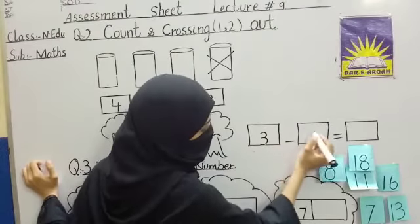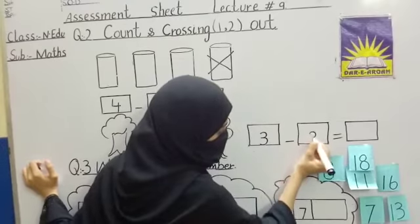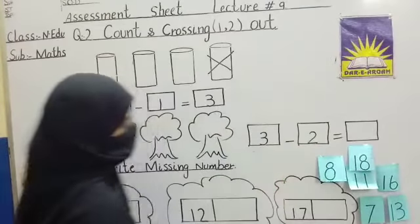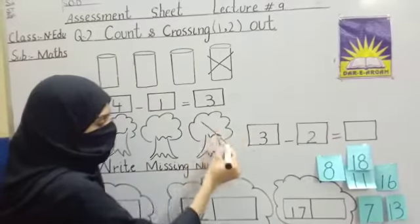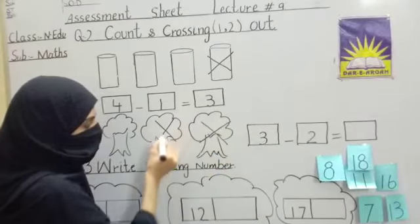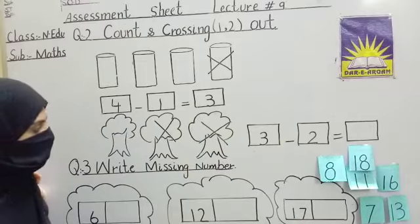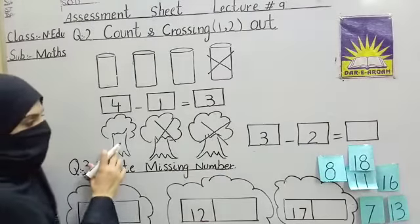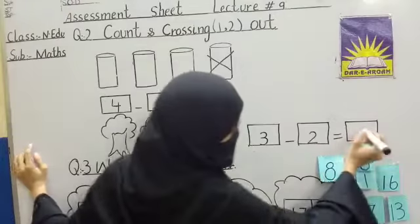And minuses we have to do. Two. Two we have to cross. One, two. Two we have to cross. Remaining trees, how many trees are there? Only one. Right here. One.